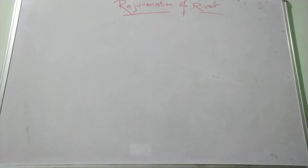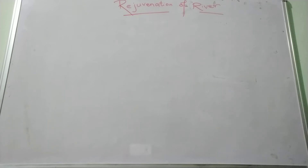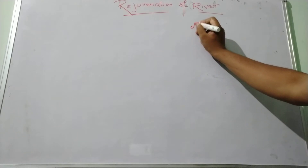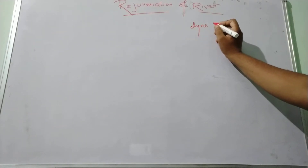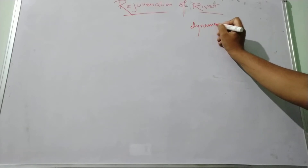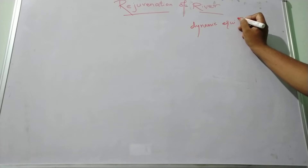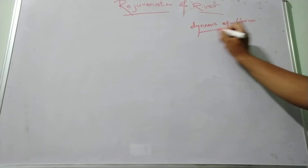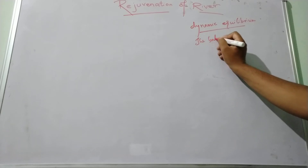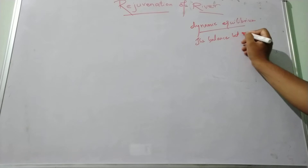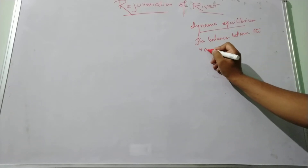Good morning friend. Today we are going to discuss about the rejuvenation of rivers. In geomorphology, a river is said to be rejuvenated when it is eroding the landscape in response to lowering of the base level. A river always attempts to reach the state of dynamic equilibrium, that is the balance between the rate of erosion and deposition.